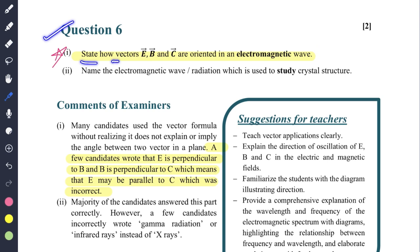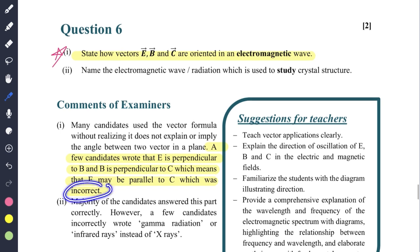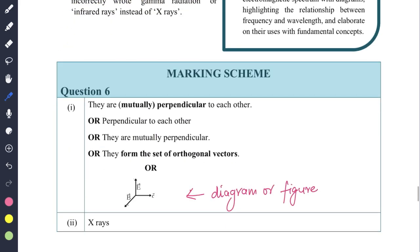Then question number six: state how vectors E, B, C are oriented in an electromagnetic wave. A few candidates wrote that E is perpendicular to B and B is perpendicular to C, which means that E may be parallel to C, which is incorrect. It might look that this statement is correct but no, it is incorrect because it implies E and C might be parallel.